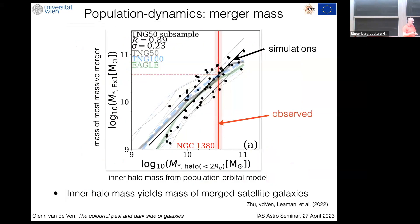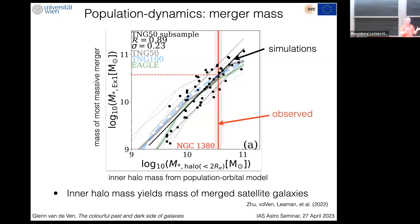Going to TNG simulations with a matched selection of 22 galaxies and performing the same modeling, we find that the mass of the inner stellar halo (the hot orbits at large radius) is very strongly correlated with the mass of the last major merger. So even though not all halo mass necessarily comes from the merger, the major merger induces all of the mass in that hot component. From our observation of the pilot galaxy, we read off from this correlation how massive the last major merger was.